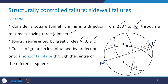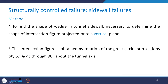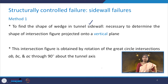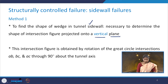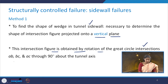The traces of these great circles can be obtained by projection onto a horizontal plane through the center of the reference sphere, giving traces A,B / B,C / and A,C. To find the shape of the wedge in the tunnel side wall, it is necessary to determine the shape of the intersection figure projected onto a vertical plane. This intersection figure is obtained by rotating the great circle intersections A,B / B,C / and A,C through 90 degrees about the tunnel axis.